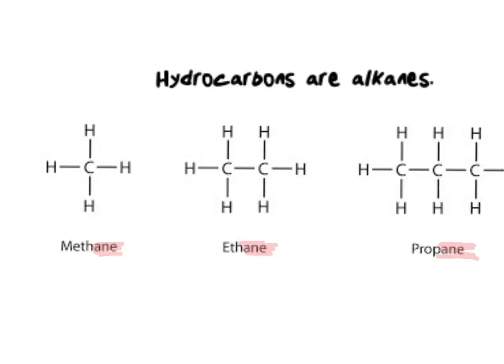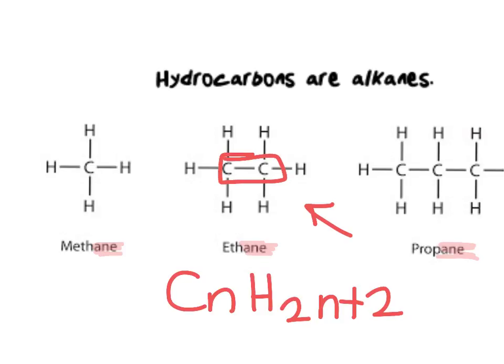Alkanes have a general formula of CnH2n+2. So if you take ethane, for example, it's got two carbons. It then has two times the number of hydrogens plus two. Therefore, it has six.